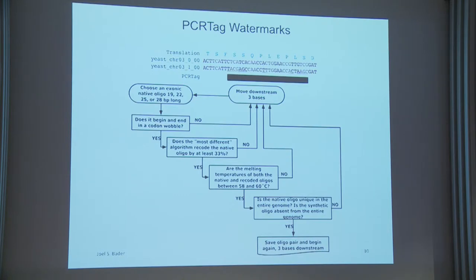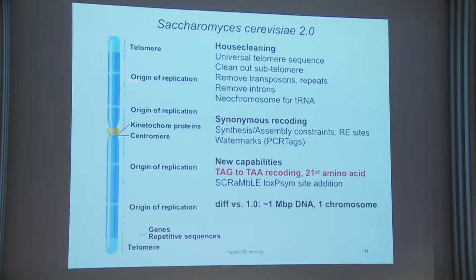This is one of the areas where we had to pull out some algorithmic work and make it run fast enough to solve the constraint problem to make these unique in the genome. We've also done TAG codon recoding so that eventually we might be able to introduce a 21st amino acid into the genetic code. And we've put in LoxP-Sym sites — symmetric versions of LoxP sites that, when Cre recombinase is around, permit recombinations in the genome to give inversions, transpositions, and deletions.